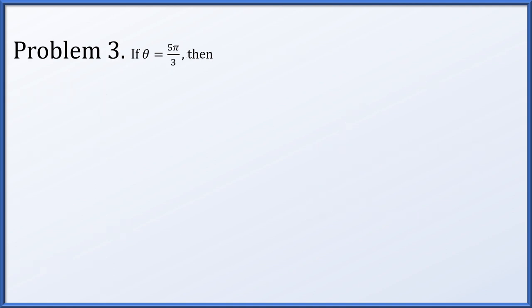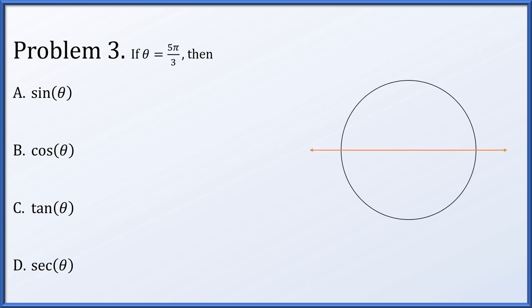In problem 3, theta is given to be 5π/3. We're going to find exact values for the sine, cosine, tangent, and secant of the angle. 5π/3 is close to 2π — in fact, it's π/3 away. This is our reference angle, the acute angle formed with the x-axis. Looking up π/3, we get an x-coordinate of 1/2 and a y-coordinate of √3/2, but since we're in the fourth quadrant, we make our y-coordinate negative.